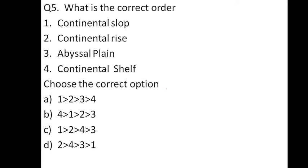What is the correct order: continental slope, continental rise, abyssal plane, and deep sea plane, and continental shelf? The correct option is continental shelf, then continental slope, then continental rise, then abyssal plane or deep sea plane. So the option B is correct.